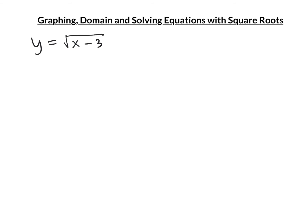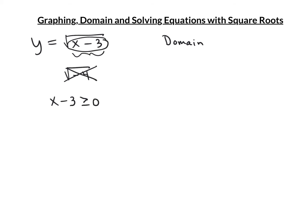If I'm given an equation like y equals the square root of x minus 3, and I'm asked about the domain, all I need to do is look at the square root part. Because I can't take the square root of a negative number, x minus 3 can't be negative — it's got to be greater than or equal to 0. This whole thing has to be greater than or equal to 0. Remember how you solve an inequality, just like an equation: add 3 to both sides, and we get x is greater than or equal to 3. If I plug any value greater than or equal to 3, it'll work in this equation.